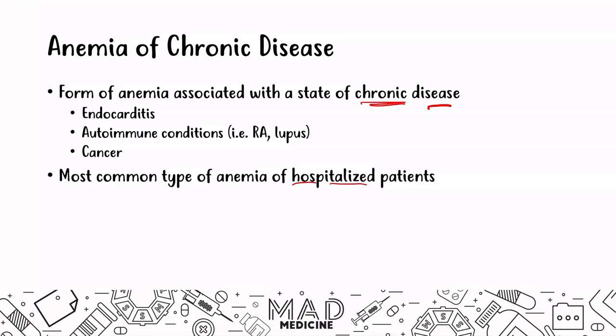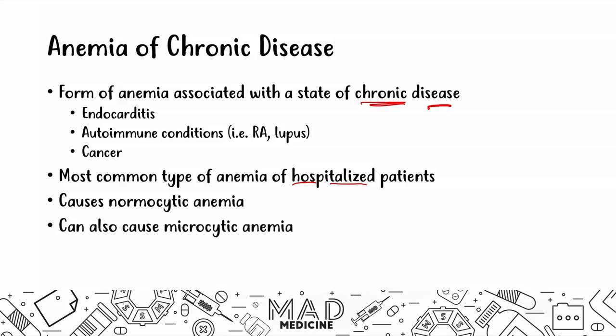You're going to have signs of anemia like lethargy and getting tired easily — the B symptoms that can occur with anemias. Anemia of chronic disease leads to a normocytic anemia, but it can also cause a microcytic anemia as well. For Step 1, you can mainly equate it to normocytic anemias, as microcytic presentations are less common in vignettes.